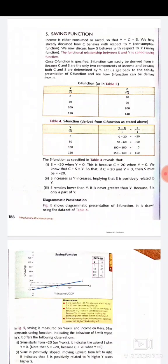Next is the saving function. Income is either consumed or saved, so income always equals consumption plus saving. The relationship between saving and income is known as the saving function. Table 3 shows the saving function: when income is 0, consumption is 20, so saving is 0 minus 20 equals minus 20 — there is negative saving. When income is 50, consumption is 60, so saving is minus 10.